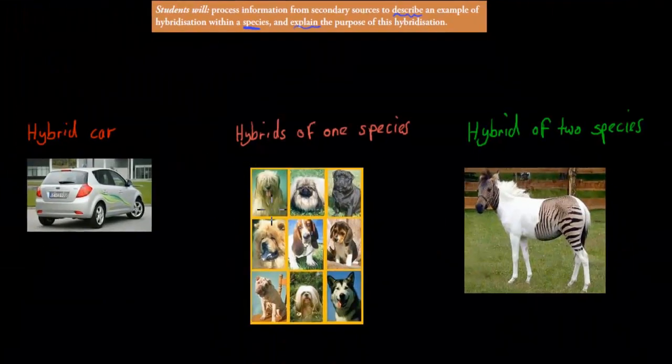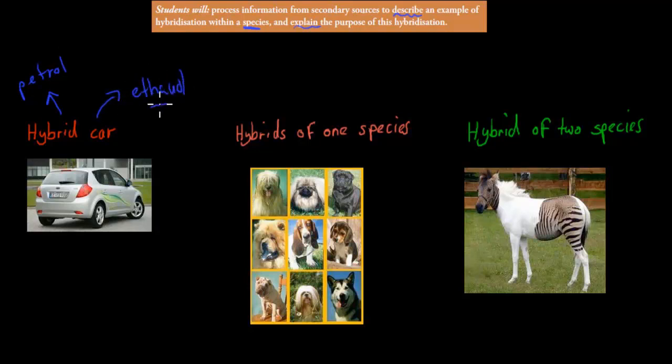So first I want to talk about species examples. If for example we talk about hybrid cars, they work on petrol, they are a mixture of petrol and ethanol. So that's a hybrid car. It's not just one, it's a combination of two different things. If we say hybrid of a species, this is actually a hybrid of a species. You can see there is a bit of horse and a bit of zebra in there. So horse and zebras are different species.